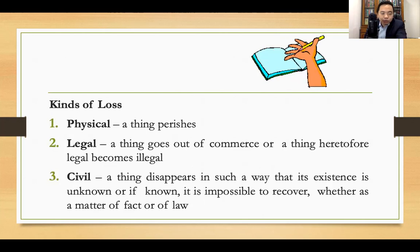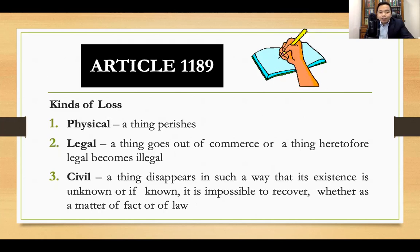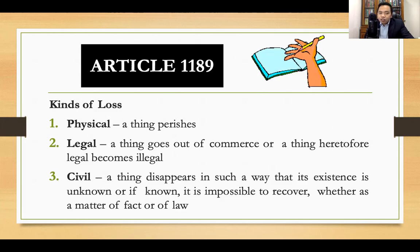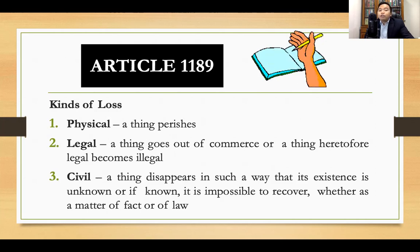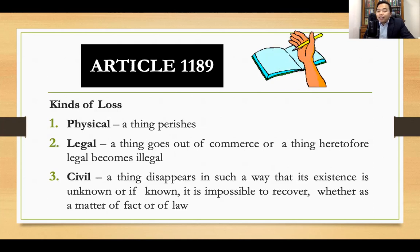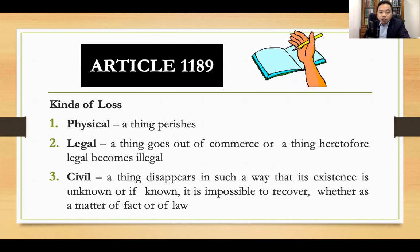What are the rules? First, let us define loss. When you say loss, there is physical, legal, or civil loss. Physical loss is when a thing perishes. Legal loss means that a thing goes out of commerce or a thing becomes illegal. When you say civil loss, a thing disappears in such a way that its existence is unknown or, if known, it is impossible to recover whether as a matter of fact or of law.